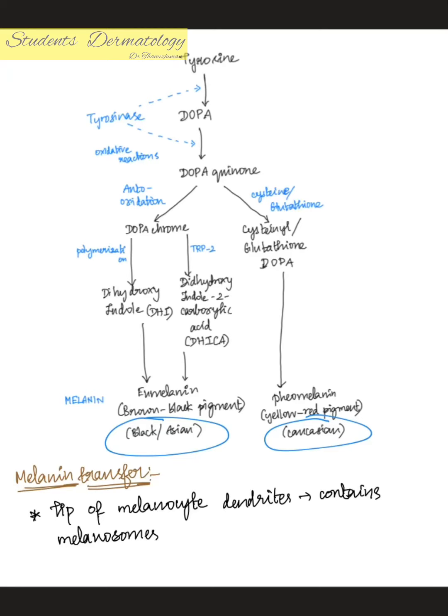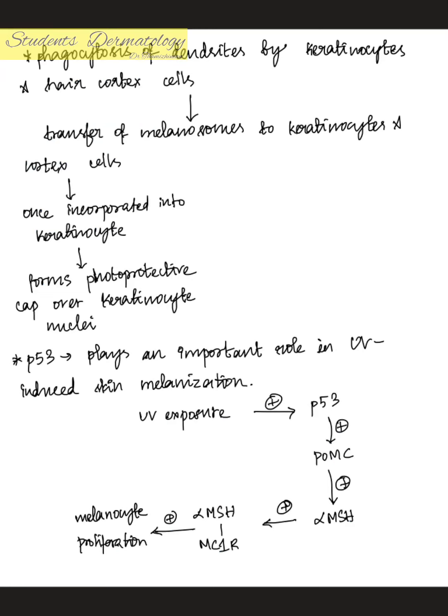Regarding melanin transfer: the tips of the melanocyte dendrites contain melanosomes. Phagocytosis of these dendrites by the keratinocytes and hair cortex cells results in transfer of melanosomes to the keratinocytes. Once incorporated into the keratinocyte, melanosomes form a photoprotective cap over the keratinocyte nucleus. There are nearly four hypotheses for this transfer of melanin from melanocyte to keratinocyte.